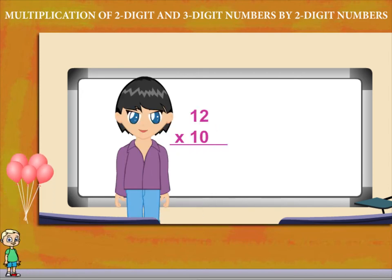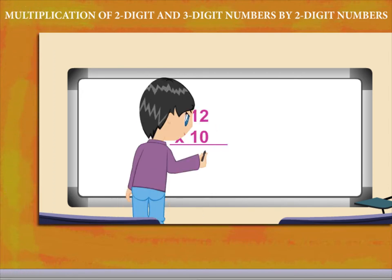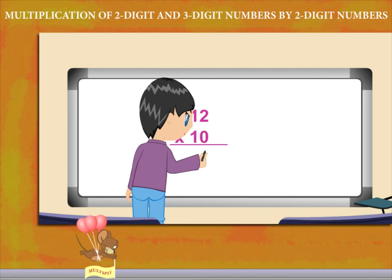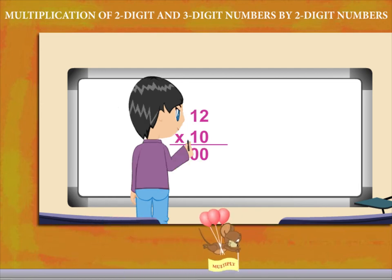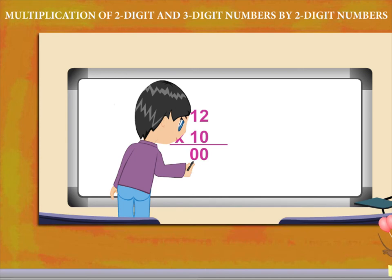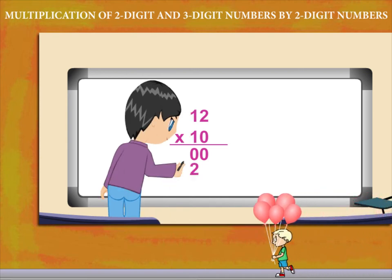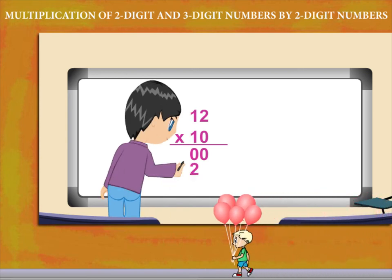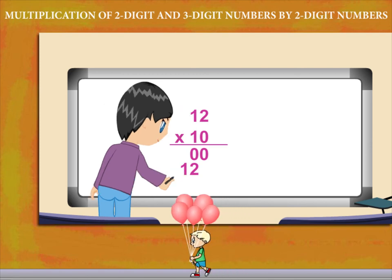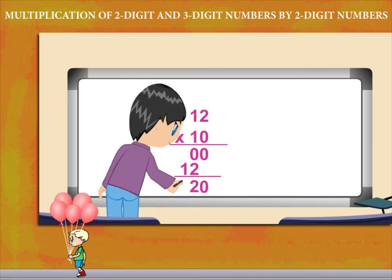She multiplies the 0 of 10 by the 1s and 10s of 12 to get 0, 0. She now multiplies the 1 ten of 10 by 2 to get 2, and by 10 to get 1. She adds up to get 120.